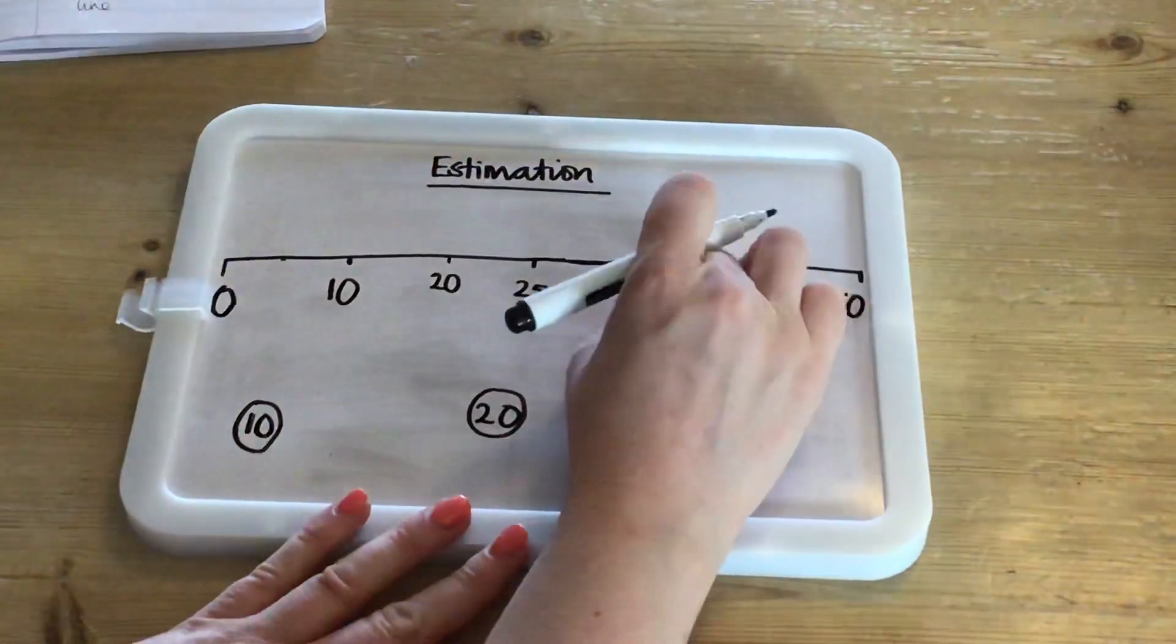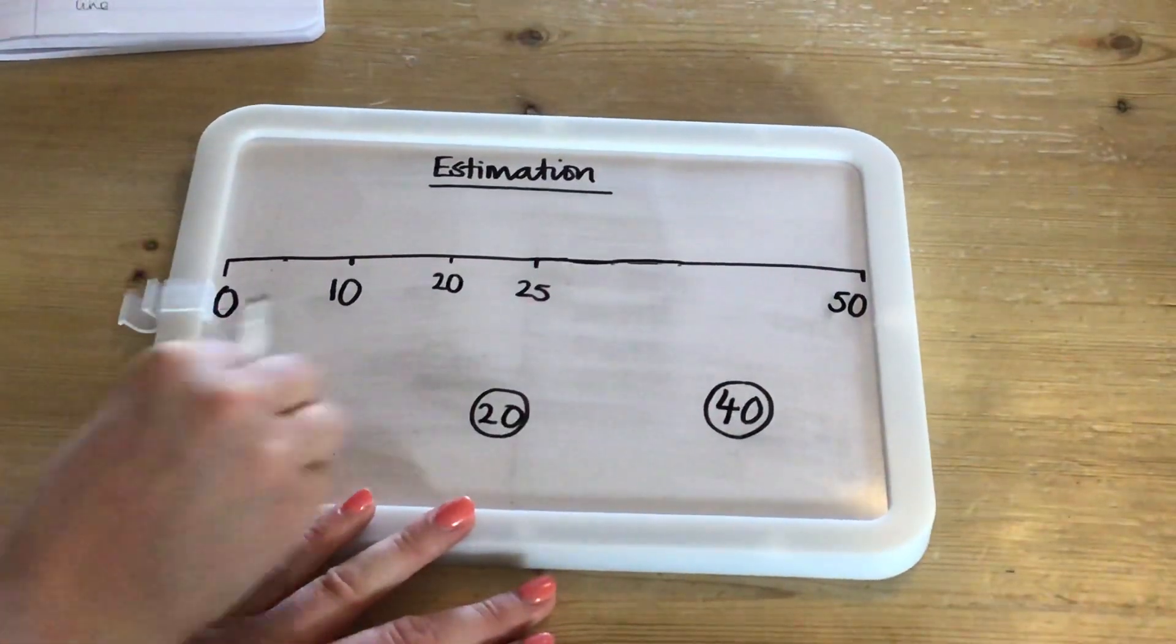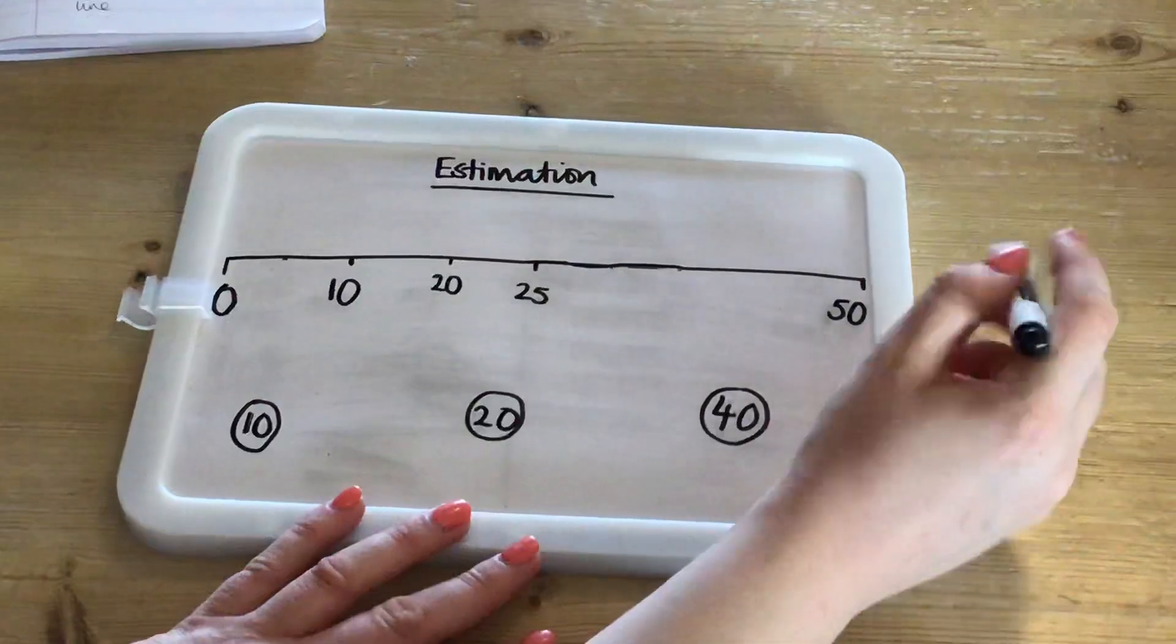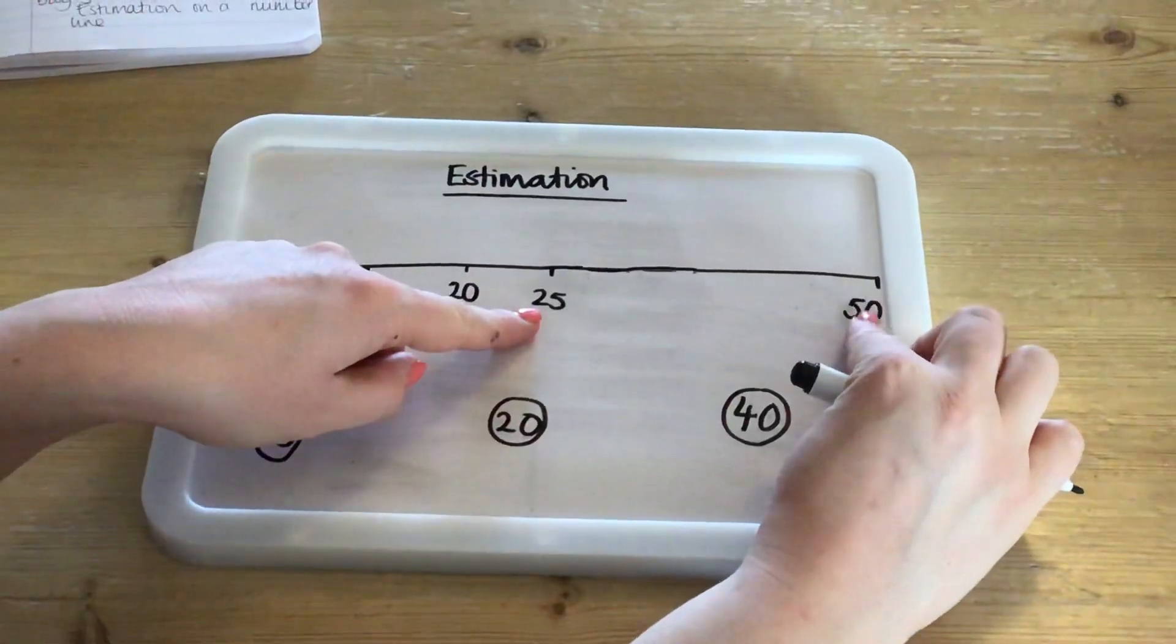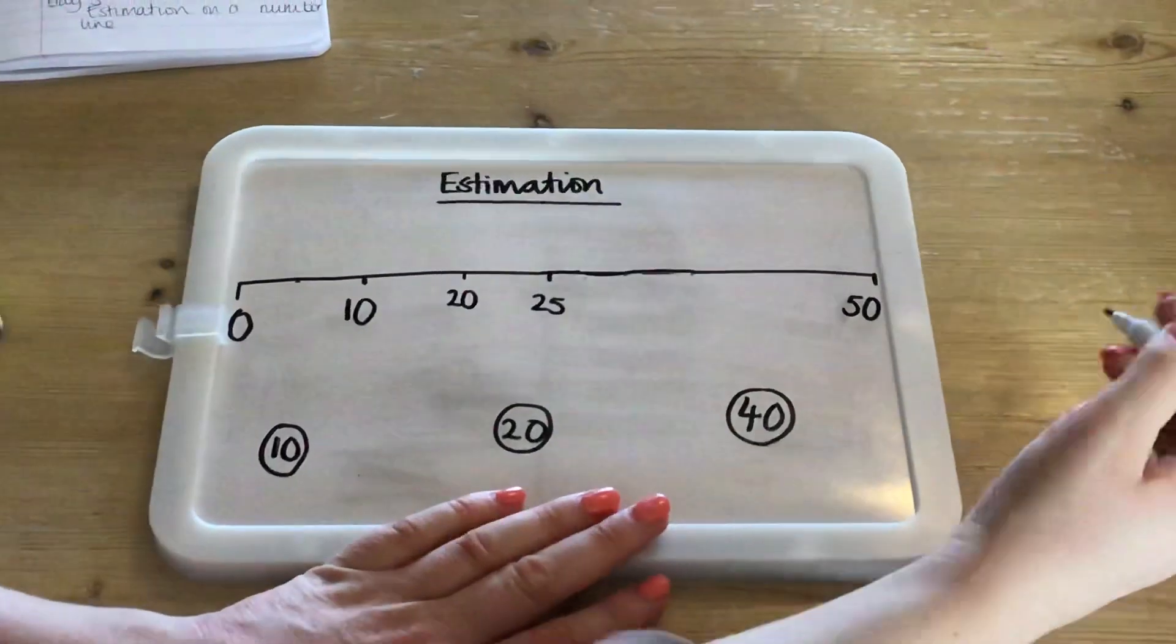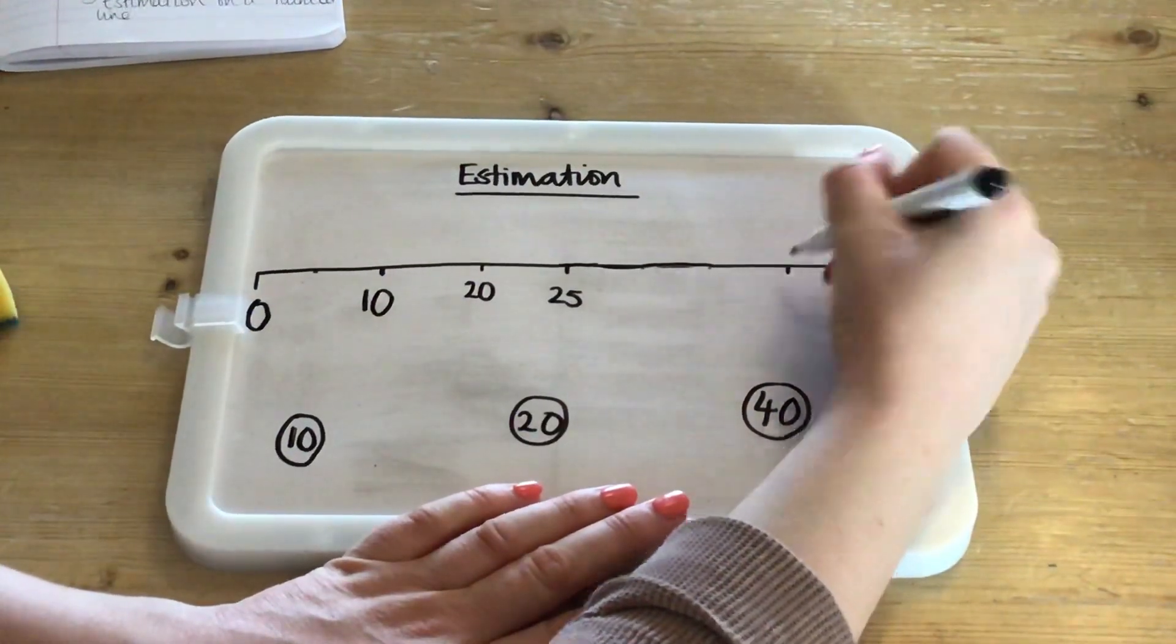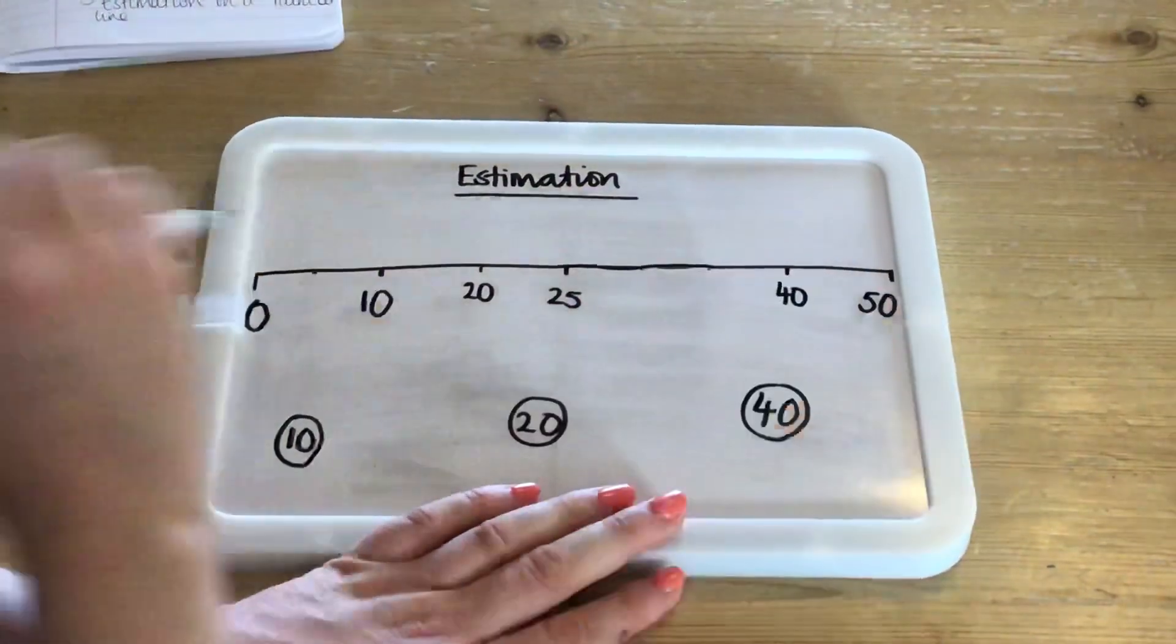Thinking now about where 40 should go on our number line, we know that it shouldn't go between 0 and 25 because 40 is greater than 25 so it needs to go over here. Having a look at our range we've got 25 and we've got 50, so decide whether 40 should go closer to 50 or closer to 25. And we know that it should be closer to 50 because 40 is only 10 less than 50 but it's 15 more than 25, so 40 should go approximately here over halfway between 25 and 50.